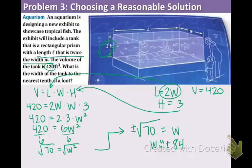Positive or negative 8.4 for the width. Does it make sense to have a positive width or a negative width? It only makes sense to have a positive width. So that means, the tank of this aquarium for the tropical fish will have a width of about 8.4 feet.